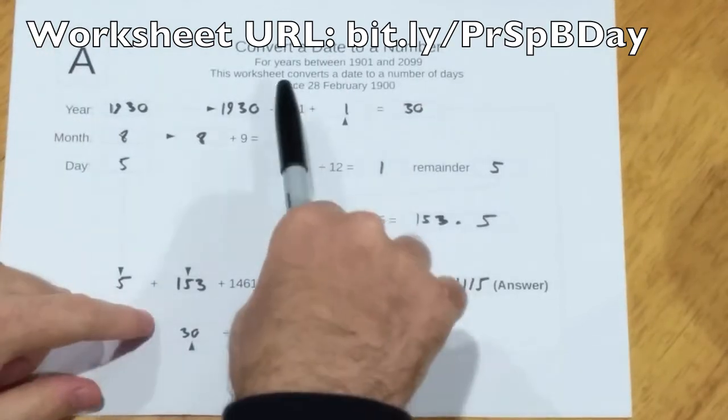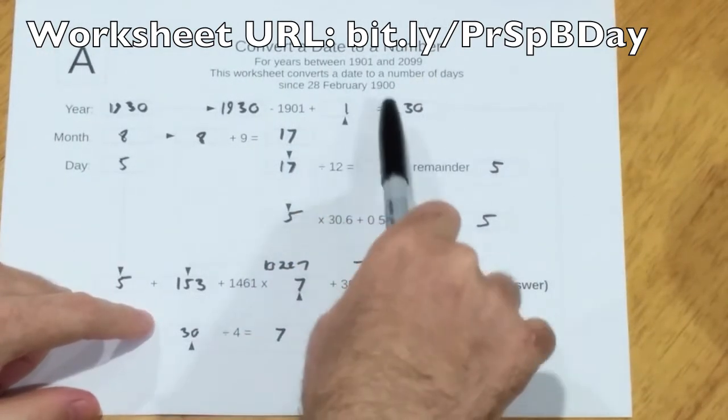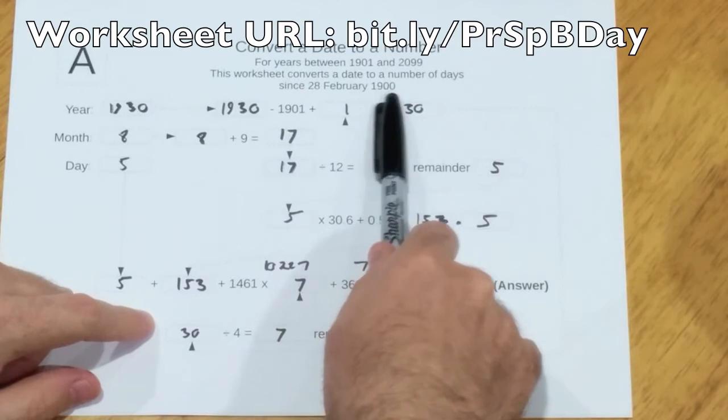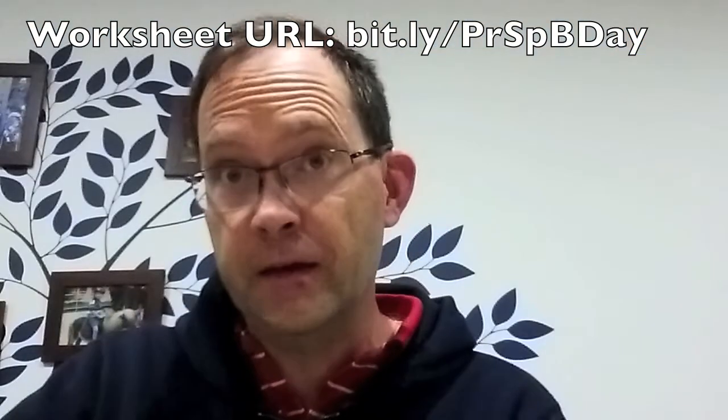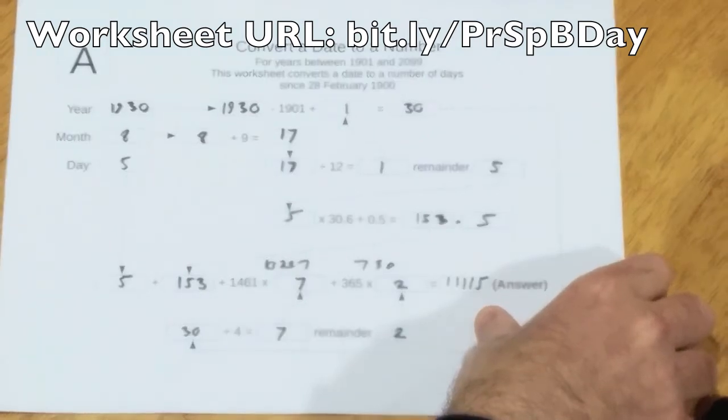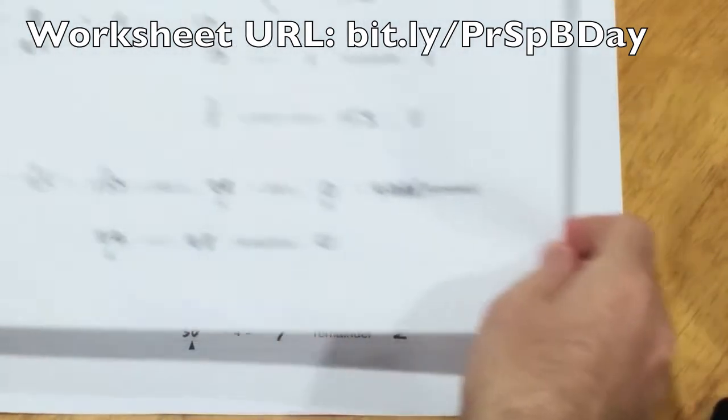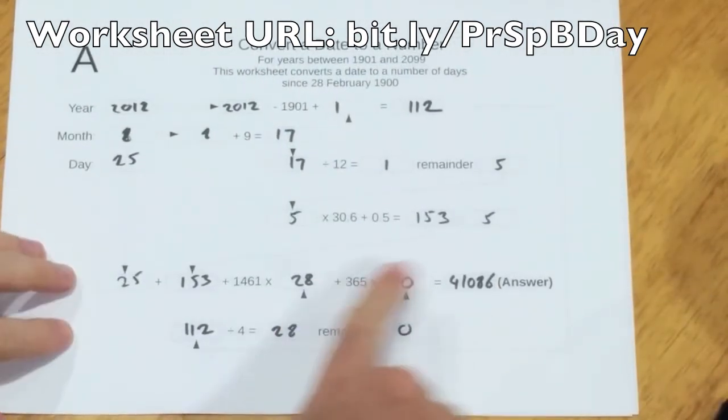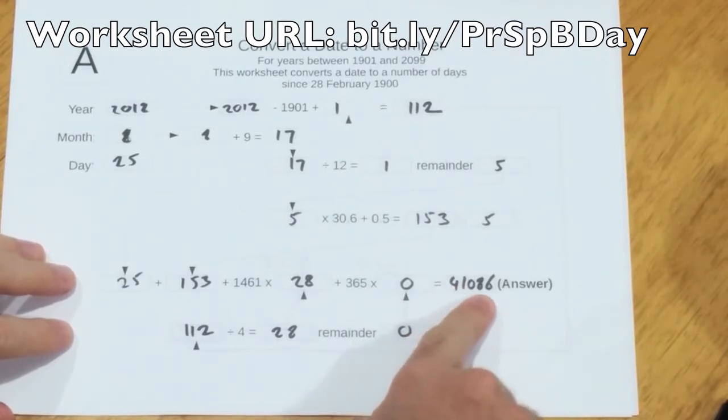And that's the number of days from the 28th of February, 1900, until the day Neil Armstrong was born. So I've also worked out for the day he passed away, and I got the answer 41,086.